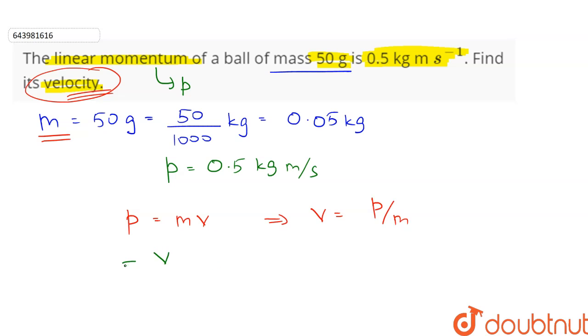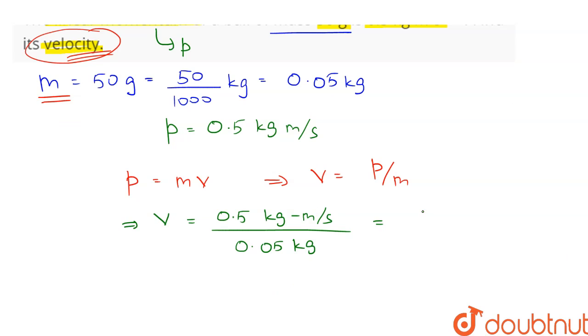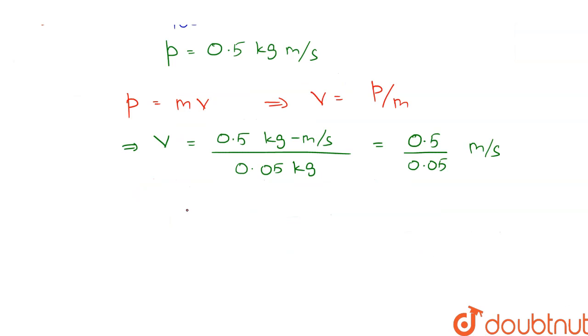Inserting values we have the velocity V equal to the linear momentum P which is 0.5 kg meter per second and the mass of 0.05 kg. Therefore upon calculation we get the velocity equal to 0.5 divided by 0.05 and the units of velocity is meter per second. Therefore the velocity V is equal to 10 meter per second. This is our answer.